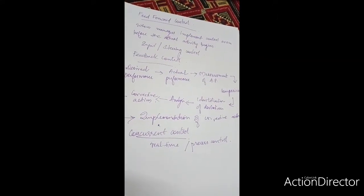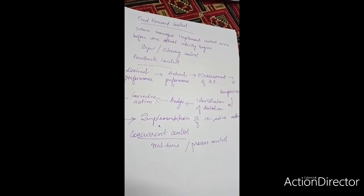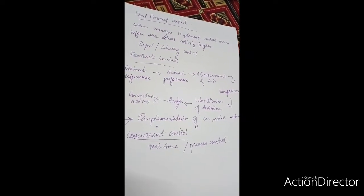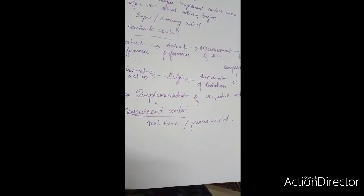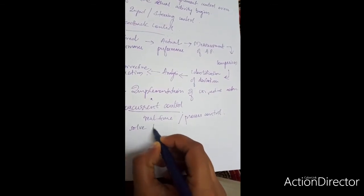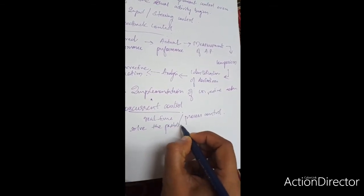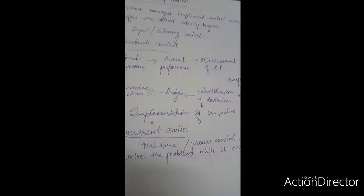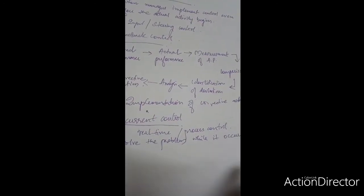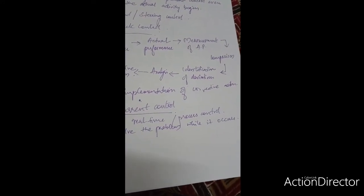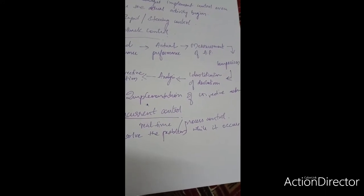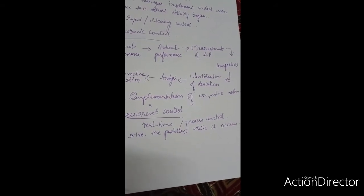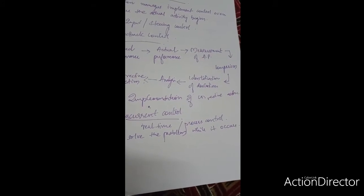This control concentrates on the present situation. When the performance standards are not met, managers or any other authorized person can stop the work activity at any point of time and make the necessary corrections needed. The main aim of this process is to solve the problem while it occurs. It is a well-known form of concurrent system. It is direct supervision by managers or supervisors. The main advantage of this control system is that it ensures that the transformation process is functioning properly and that the expected results are achieved.